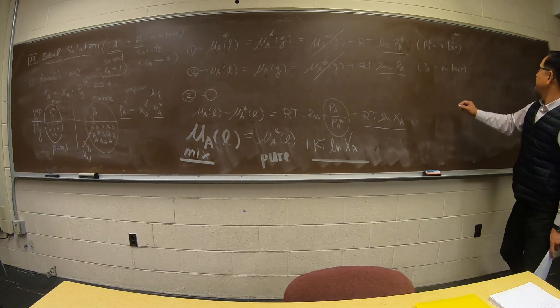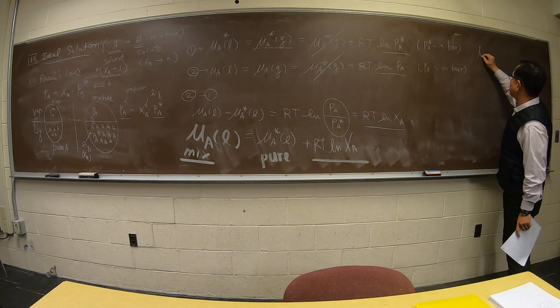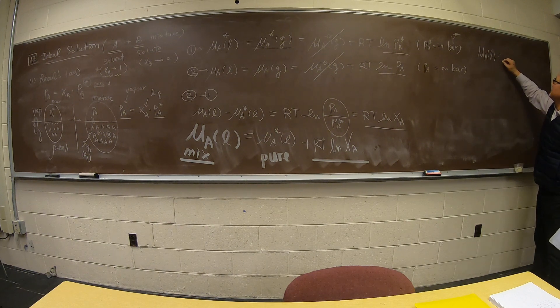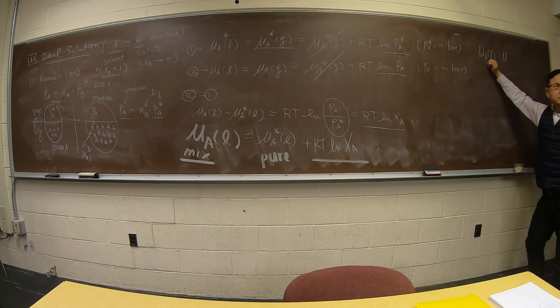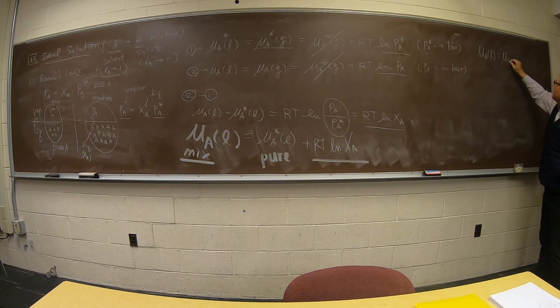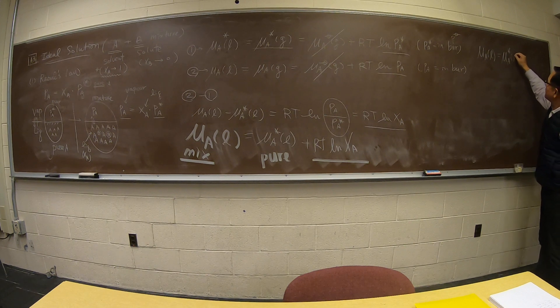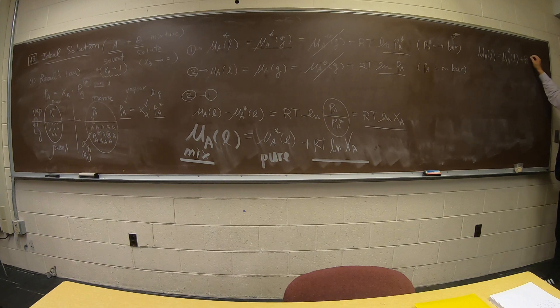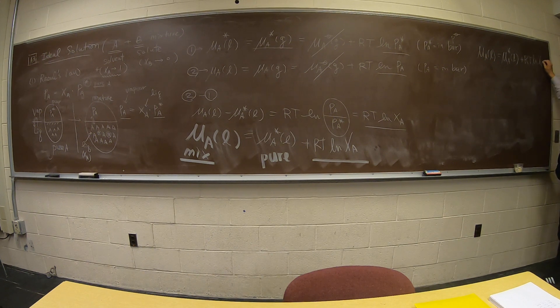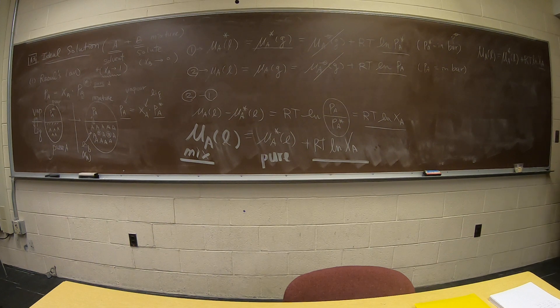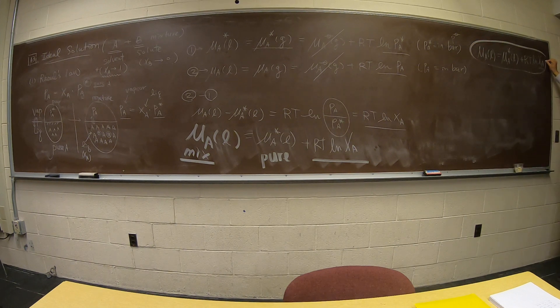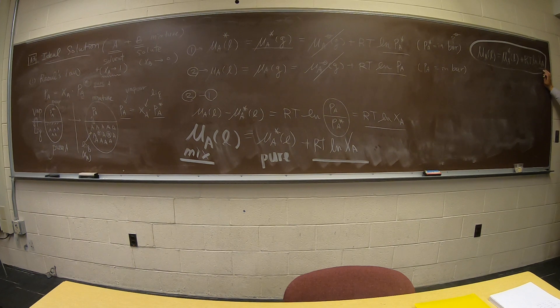So this equation is so important that I want to write it one more time. Liquid. So I want to know the chemical potential of component A in the mixtures. If you know your pure component of A in the liquid, and you just add RT natural log, let me know what's the chemical composition of it. So this is really one of the important chemical potential equations following the solution, for the ideal solution.